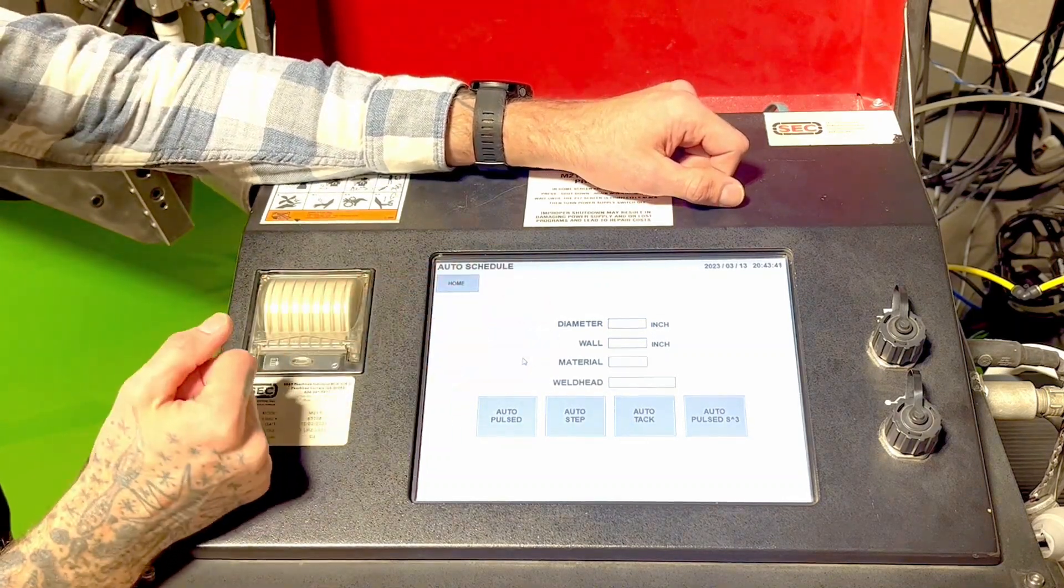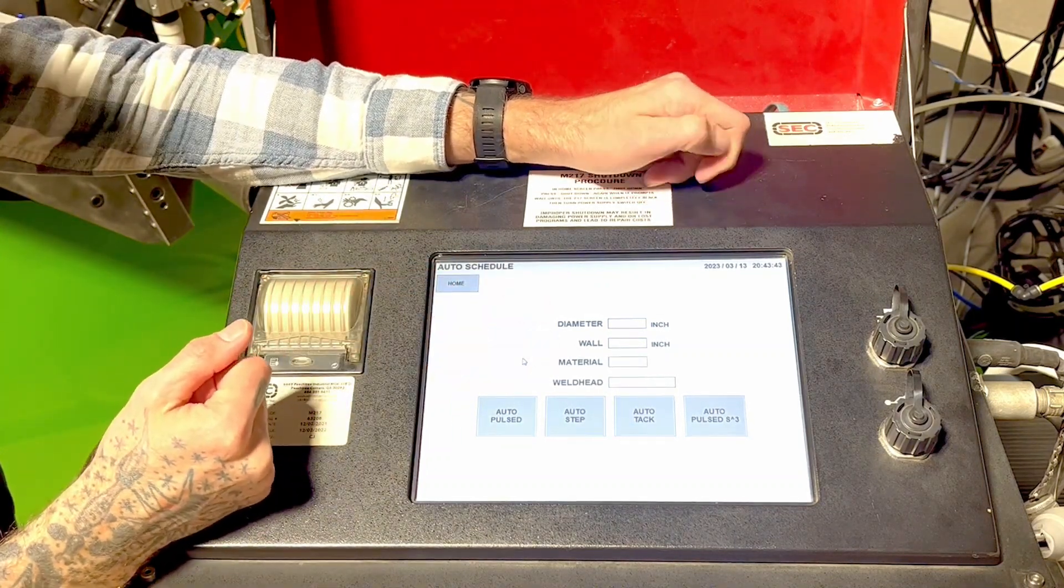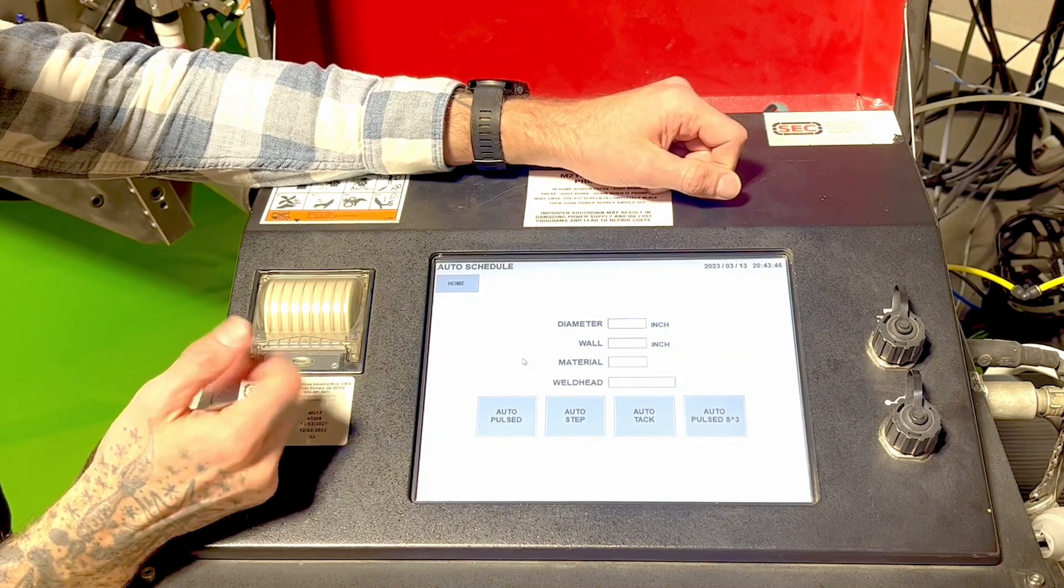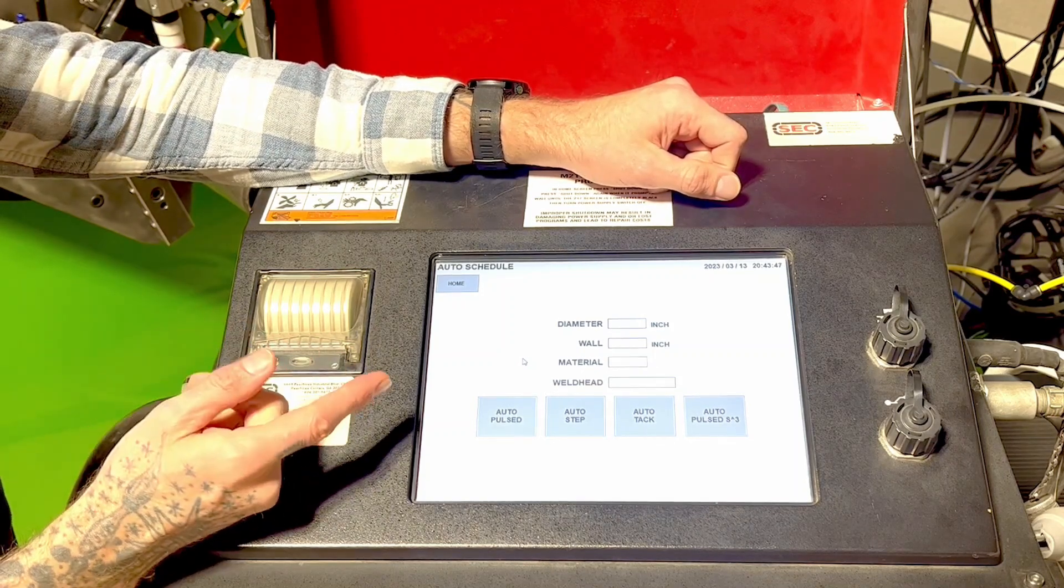Here we're prompted to answer four different questions about what we're going to be doing. We have diameter, wall, material, and weld head.